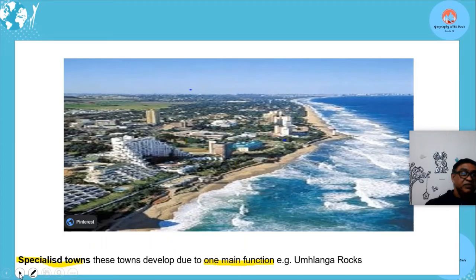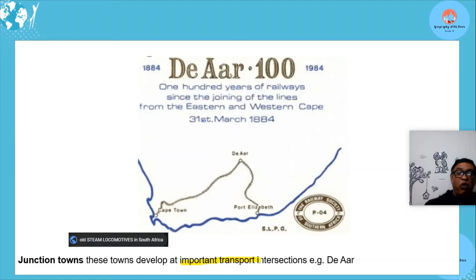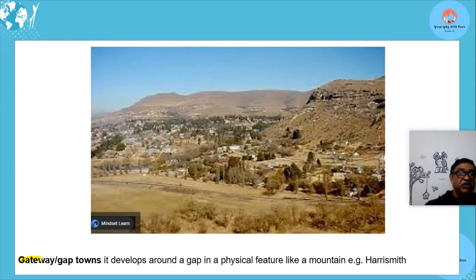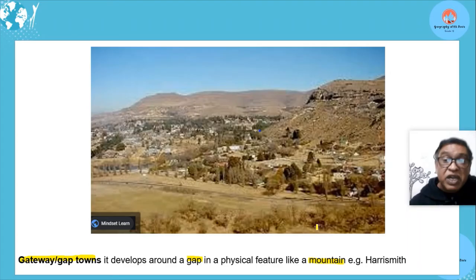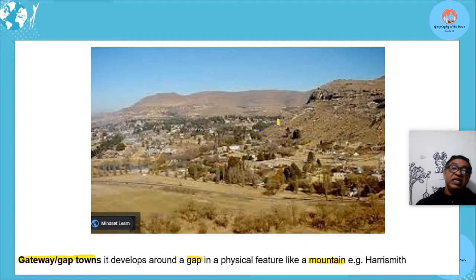Junction towns develop at important intersections — for example, where railway lines intersect, connecting Port Elizabeth to Cape Town. A town at that junction can supply both markets. Gateway or gap towns develop in a gap in a physical feature like a mountain — Harry Smith is a good example, situated in a mountain gap, with mountains on both sides.